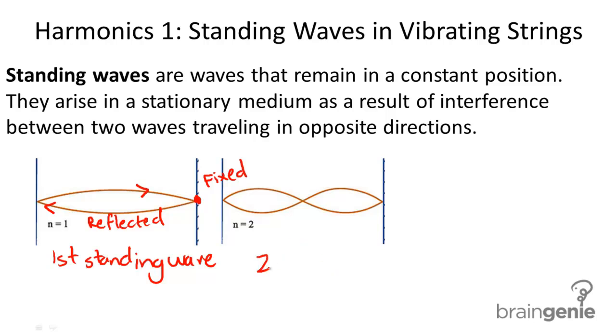This is what we call the second standing wave and then the third standing wave. Each of these require a very specific frequency in order to generate. We call this the first harmonic frequency, the second harmonic frequency, and the third harmonic frequency. These frequencies will generate these standing waves.